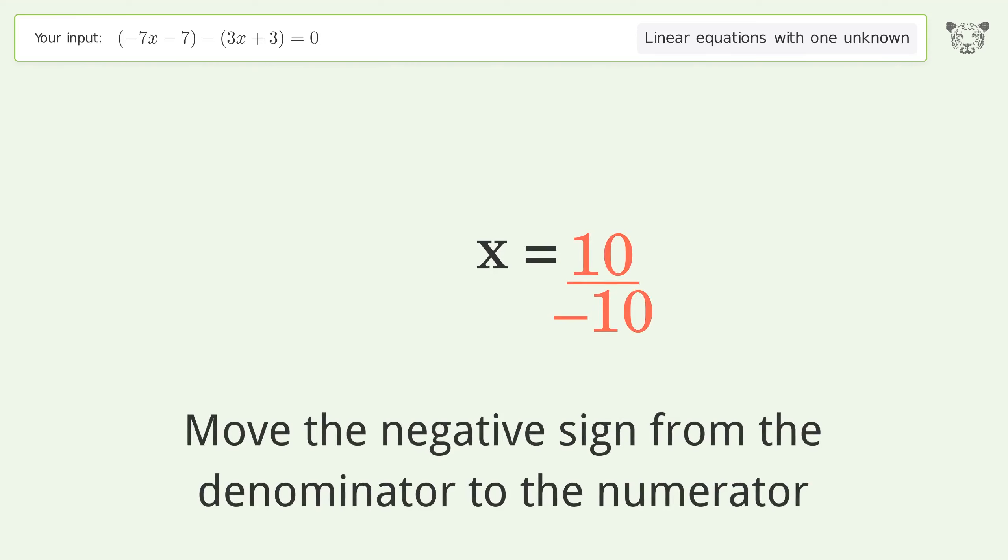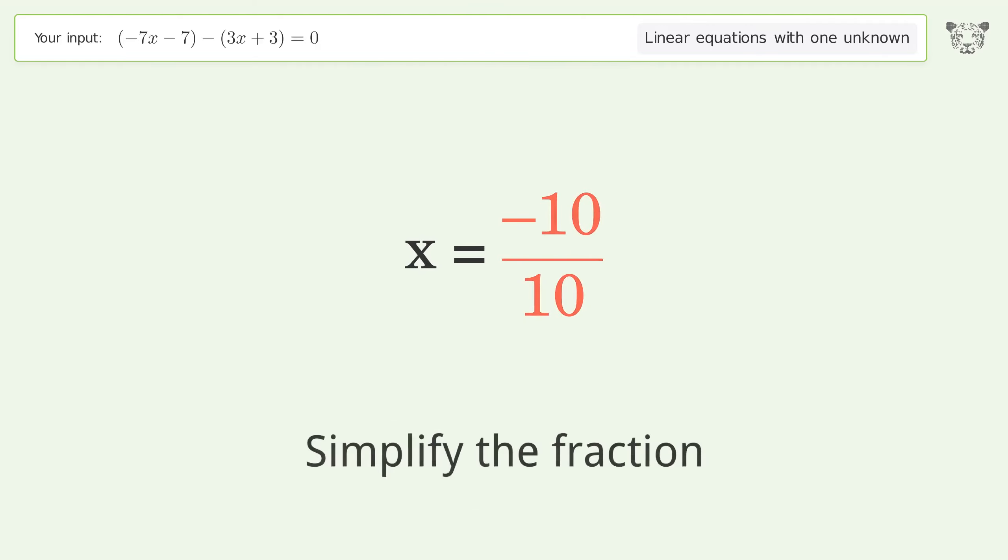Move the negative sign from the denominator to the numerator. Simplify the fraction. And so the final result is x equals negative one.